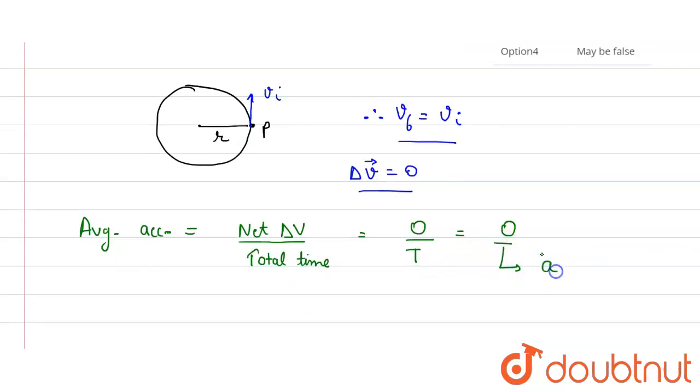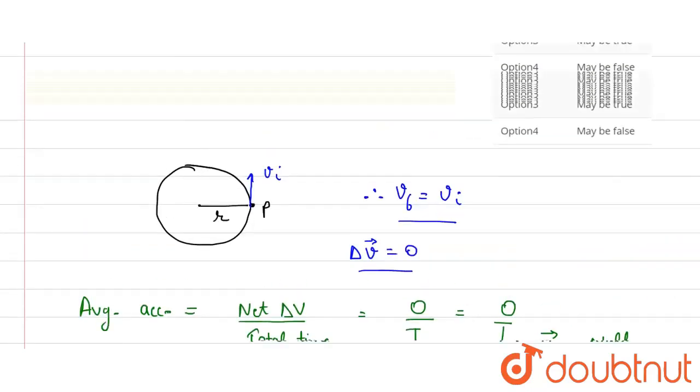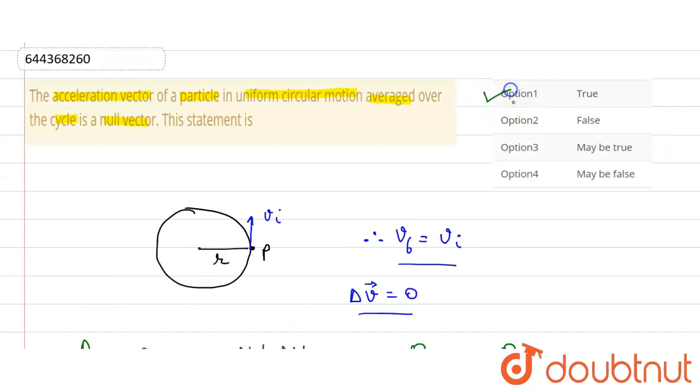So because this average acceleration is coming to zero, we can say that acceleration vector is a null vector. Okay, so this statement is true, so we can say option one is correct.